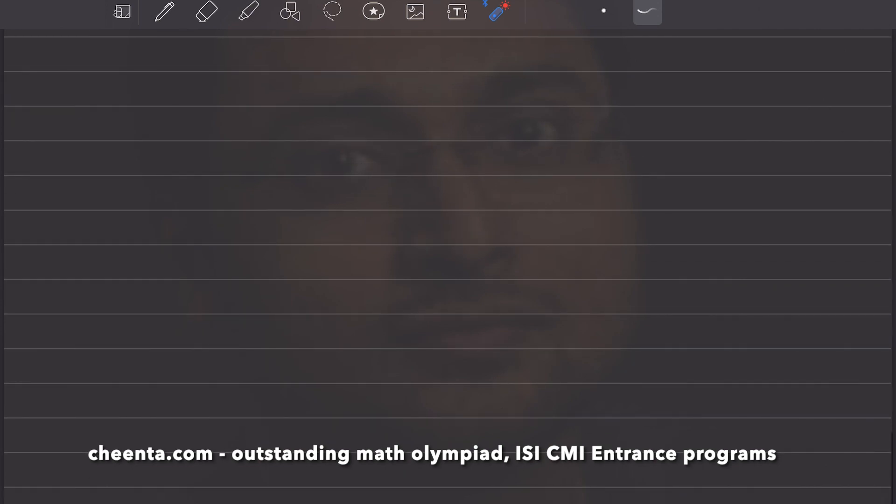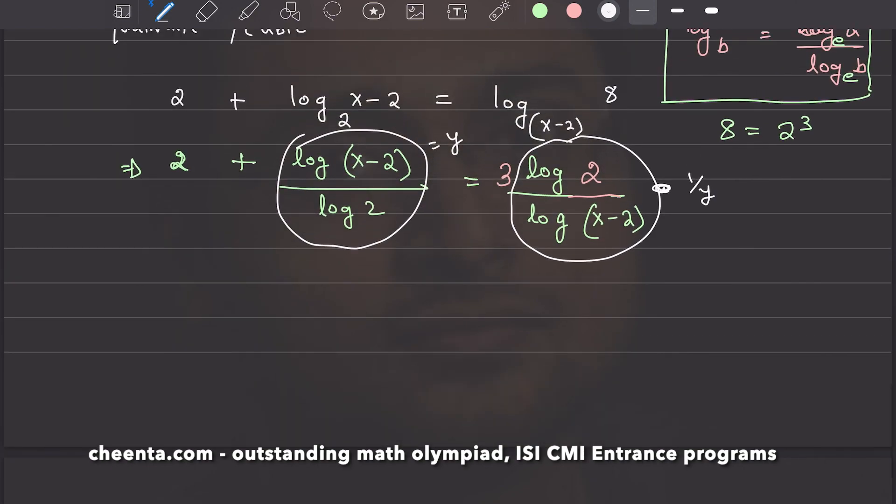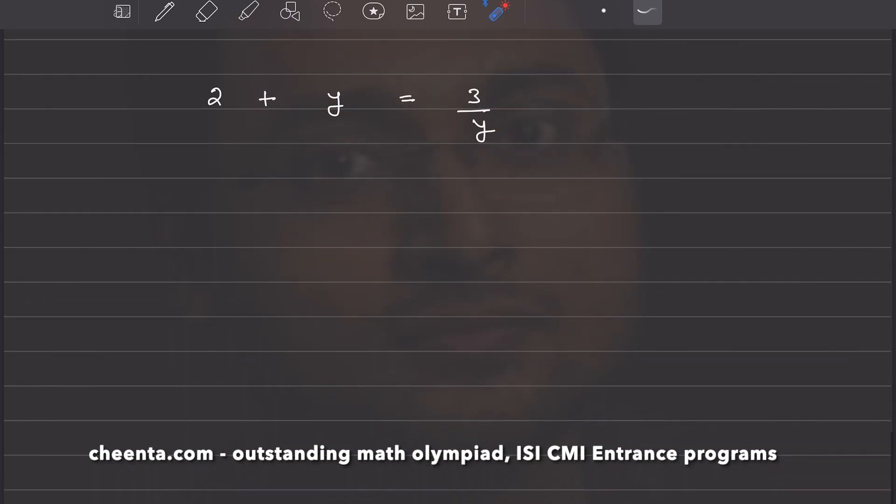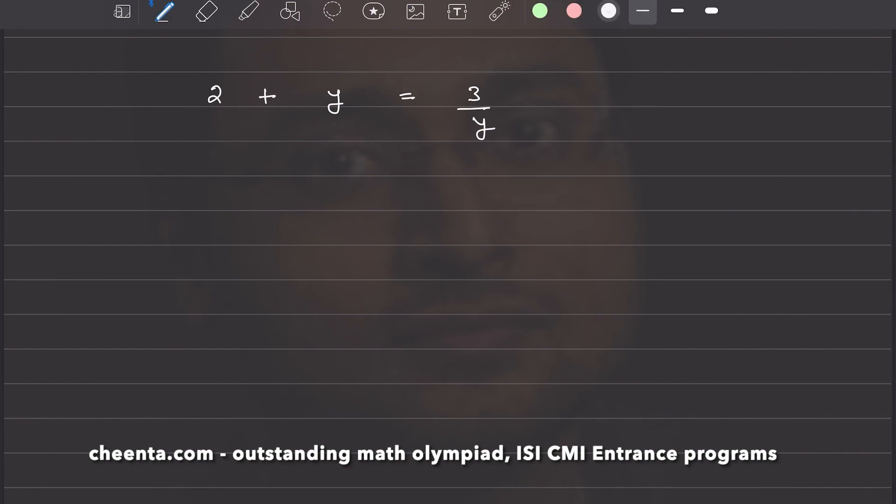Let's write it like this. 2 plus y equals to 3 by y. That's what we had, right? 2 plus y equals to 3 times 1 over y. Let's cross multiply y. So, what we have is 2y plus y square equals to 3, or y square plus 2y minus 3 equal to 0.